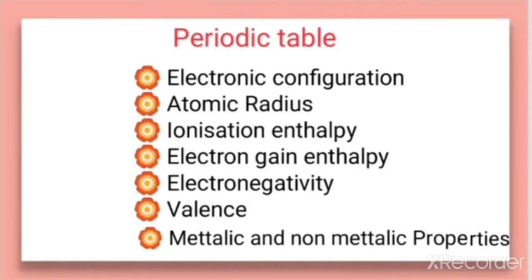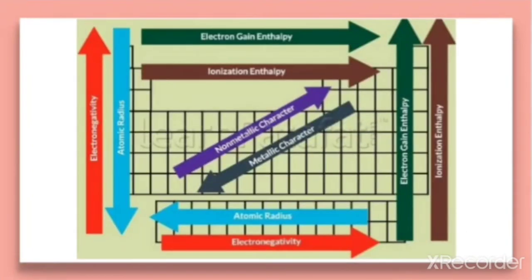When we sum up all these points, it is better to learn from this chart showing electron gain enthalpy, ionization enthalpy, metallic and non-metallic character, atomic radius, and electronegativity — and how each varies in the periodic table from left to right and top to bottom.